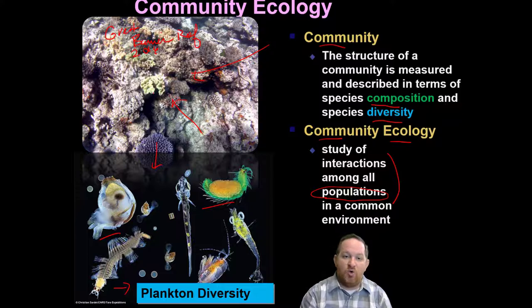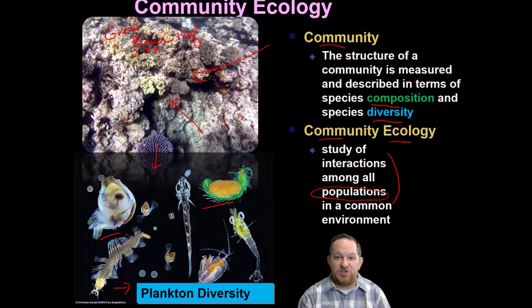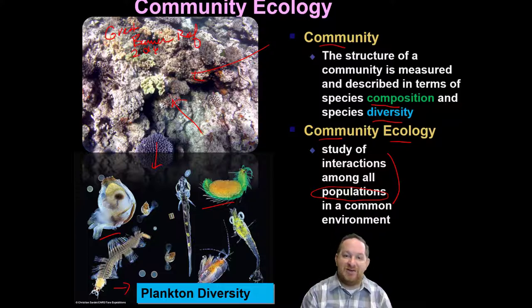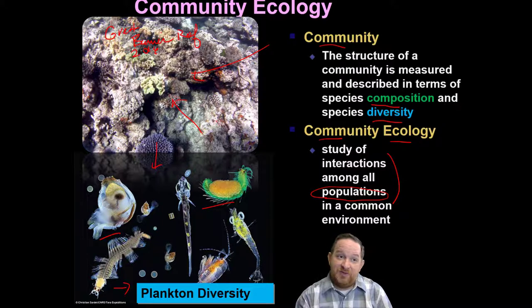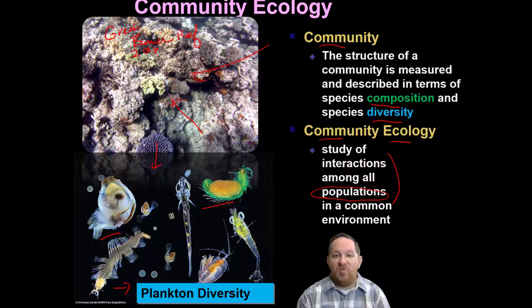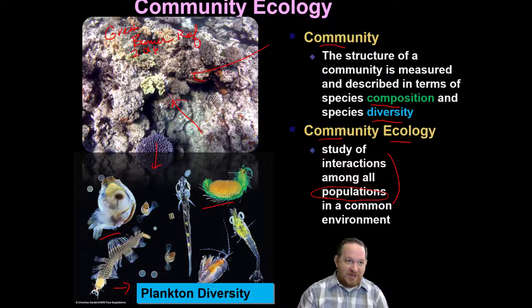This all falls under the big umbrella of community ecology, which is basically just the study of all the populations in an environment and how they interact — how the coral interacts with the fish, with the sea anemones, and even with the humans who were snorkeling around the Great Barrier Reef at that time.